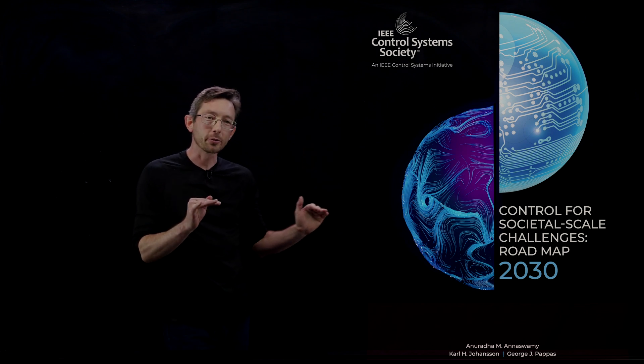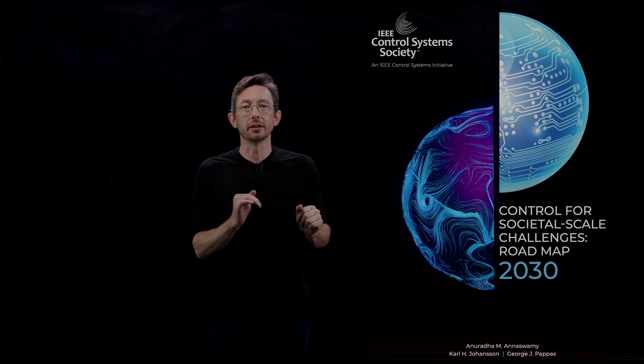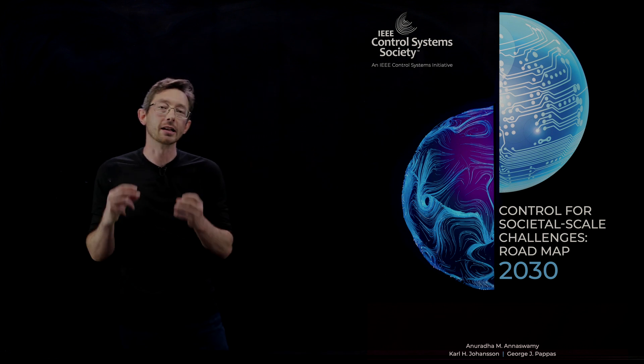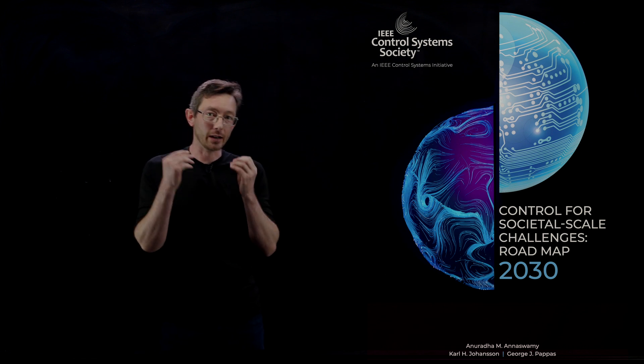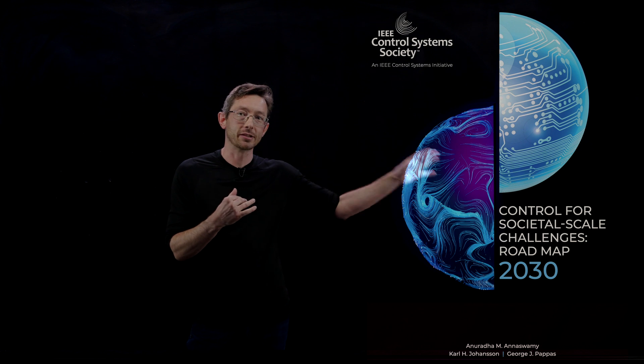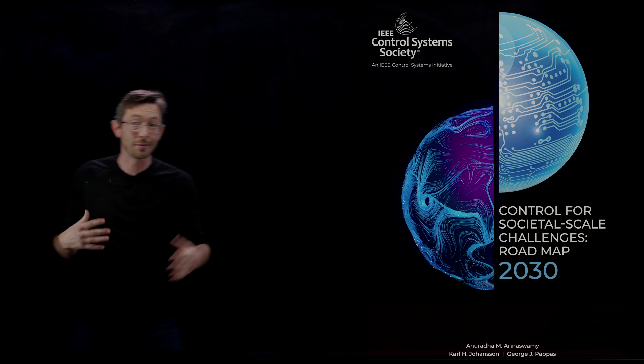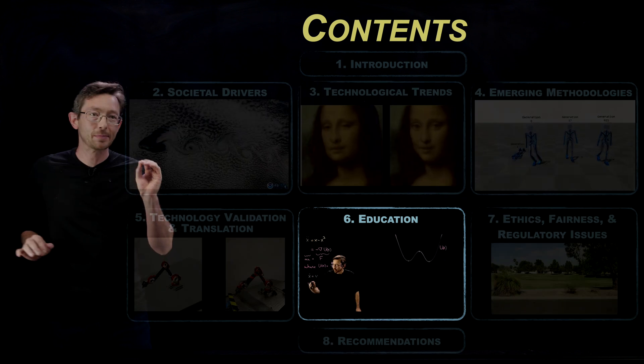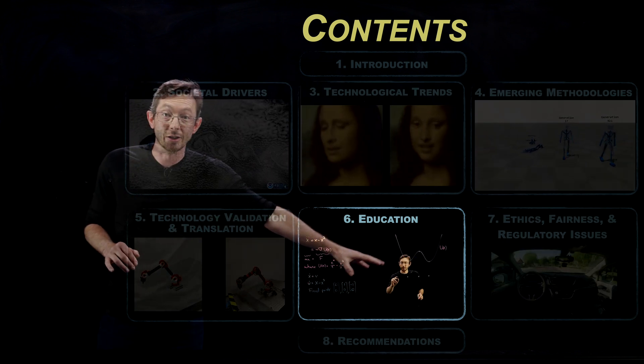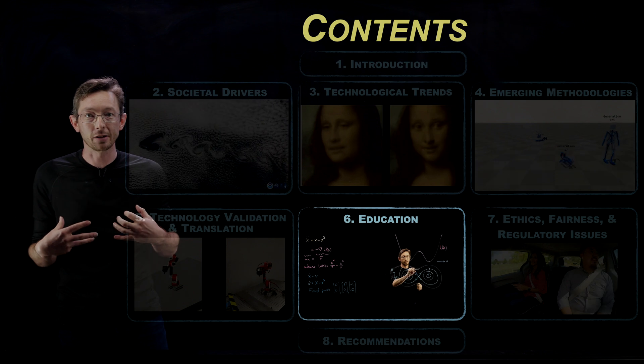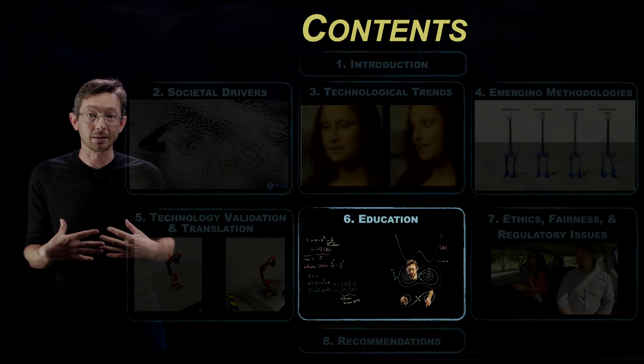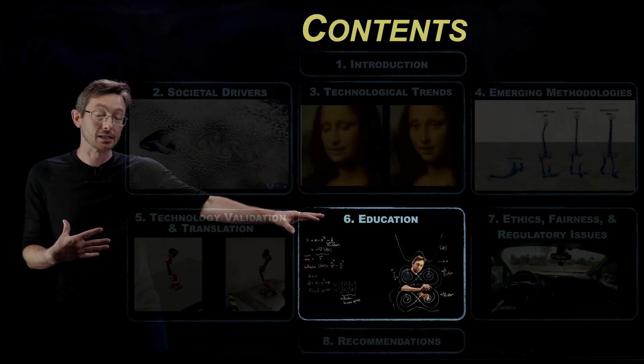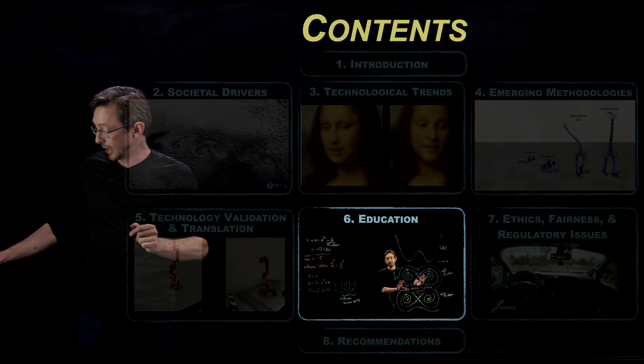Welcome back. We're going through this Roadmap 2030 document on how control theory is going to be central in addressing some of the largest societal scale challenges in the next coming decades. In this video, I'm going to zoom in specifically on the topic of education, which is a real passion of mine, very near and dear to my heart. That's chapter six of this Roadmap. That's what I'm going to talk about today.